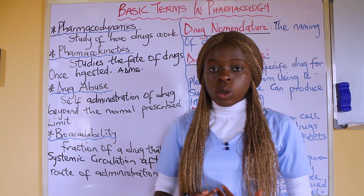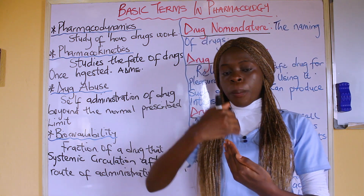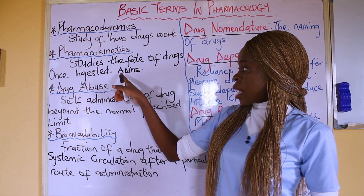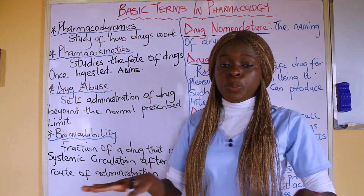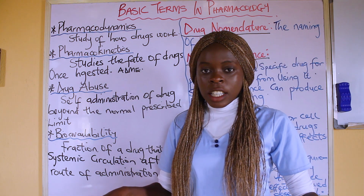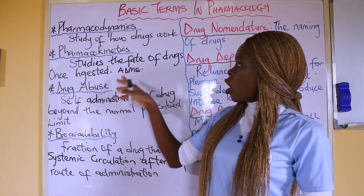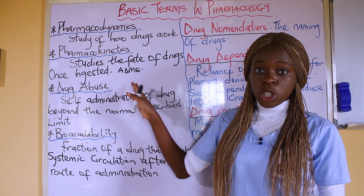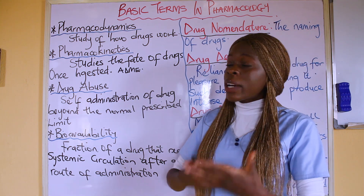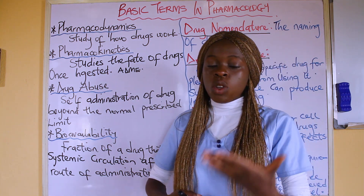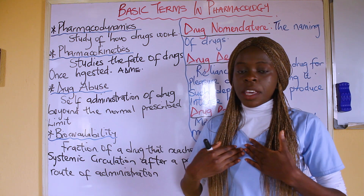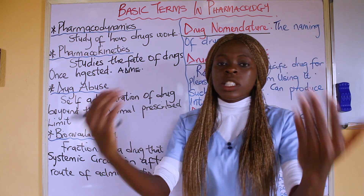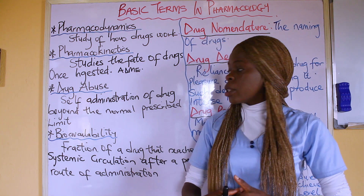Absorption is when you take drugs into the body and they are absorbed into the bloodstream. Then the drug is distributed throughout the body, metabolized, and finally excreted. This is what pharmacokinetics is all about — what we do to the drugs — while pharmacodynamics is what the drug does to our body.